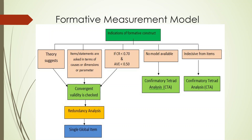There are five scenarios in which we go for the formative measurement model. One is when theory suggests your statements are more causes, dimensions, or parameters — then you go for formative. When you get CR less than 0.7 and AVE less than 0.5, you also go for formative. In reflective there is high correlation among statements, giving high Cronbach's alpha, high composite reliability, and high average variance extracted. But in formative there is very low or moderate correlation, so CR and AVE go down, indicating a possible formative construct.